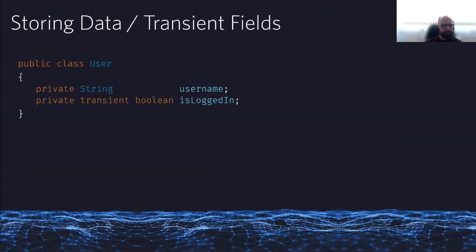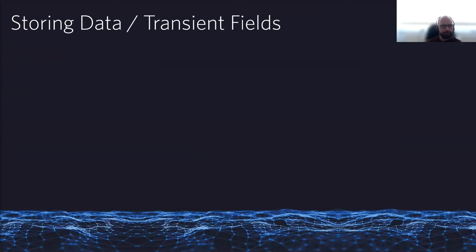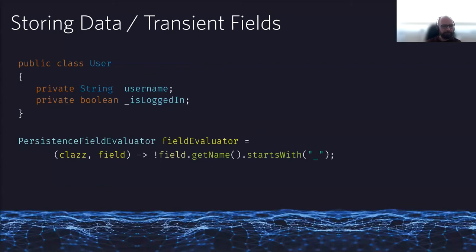On the other hand, you can control which fields should be excluded from persistence — for example temporary flags or computed fields. The default predicate in the MicroStream configuration excludes transient fields. If you want a different configuration, you can use a field evaluator — for example, using a field name prefix like underscore — to customize which fields are excluded from storage.